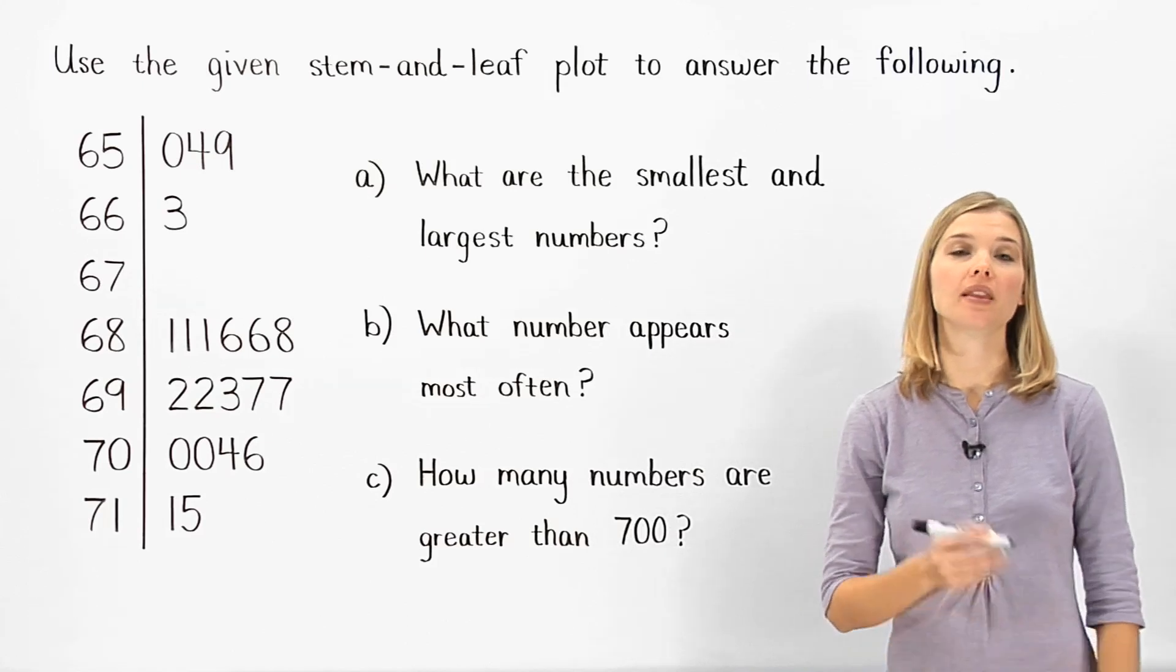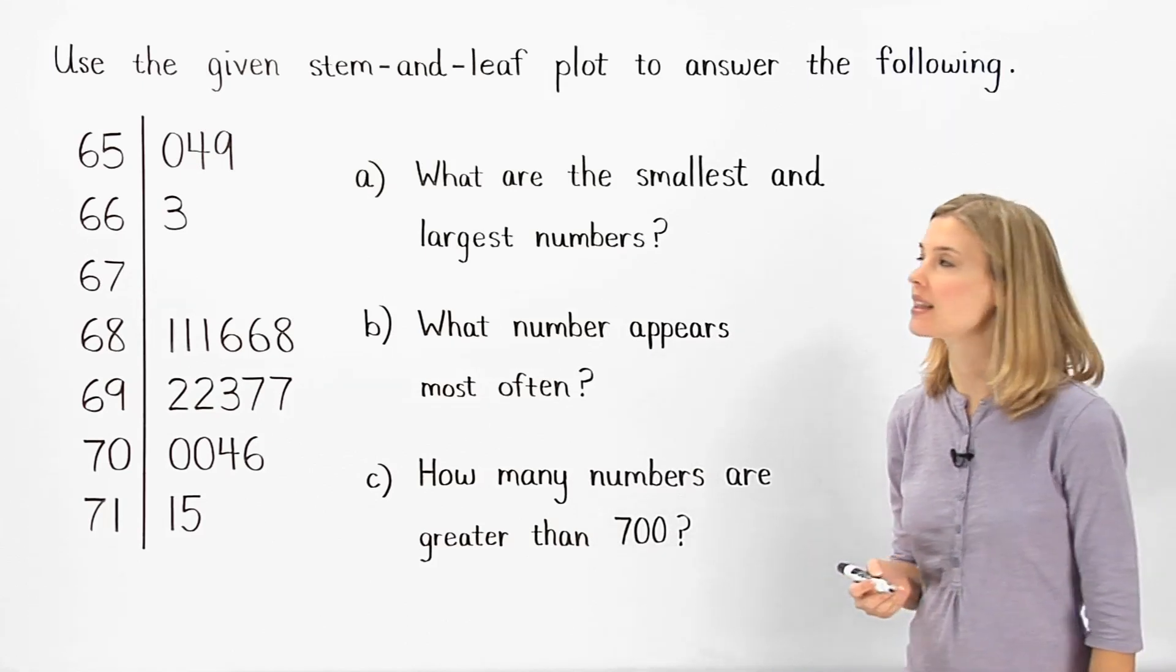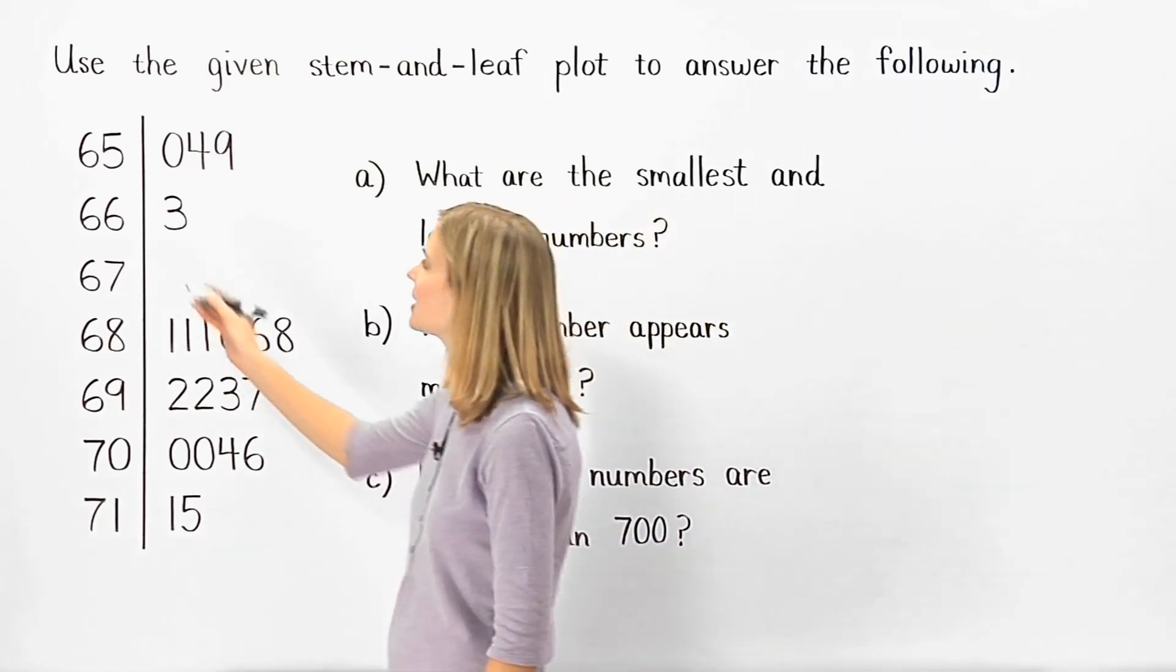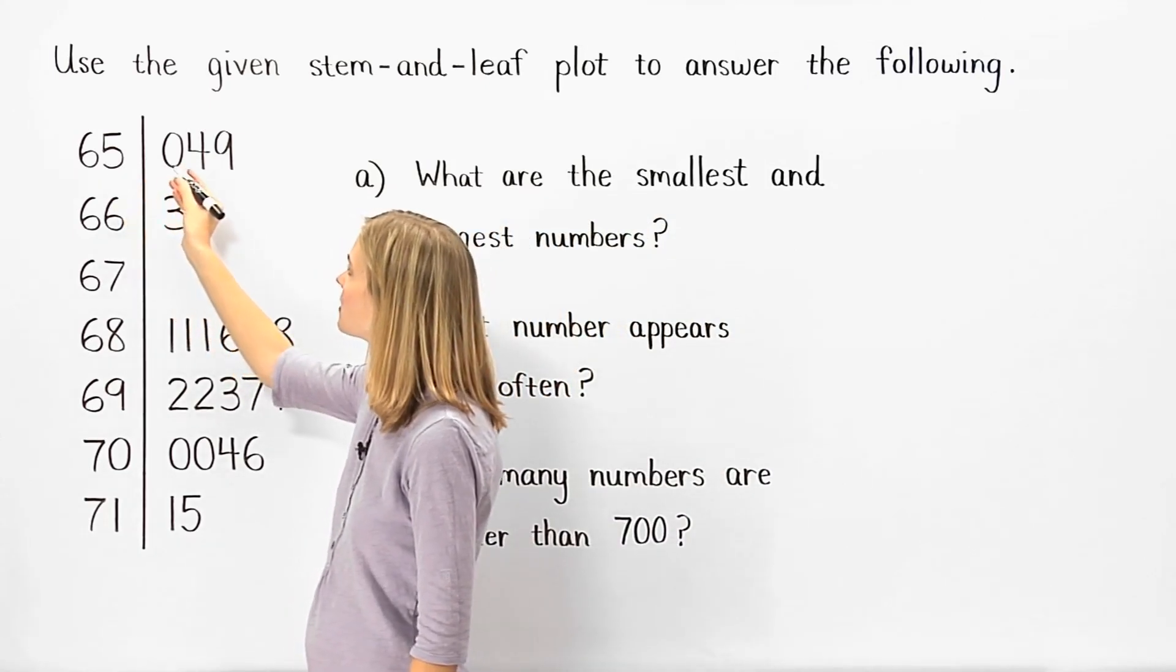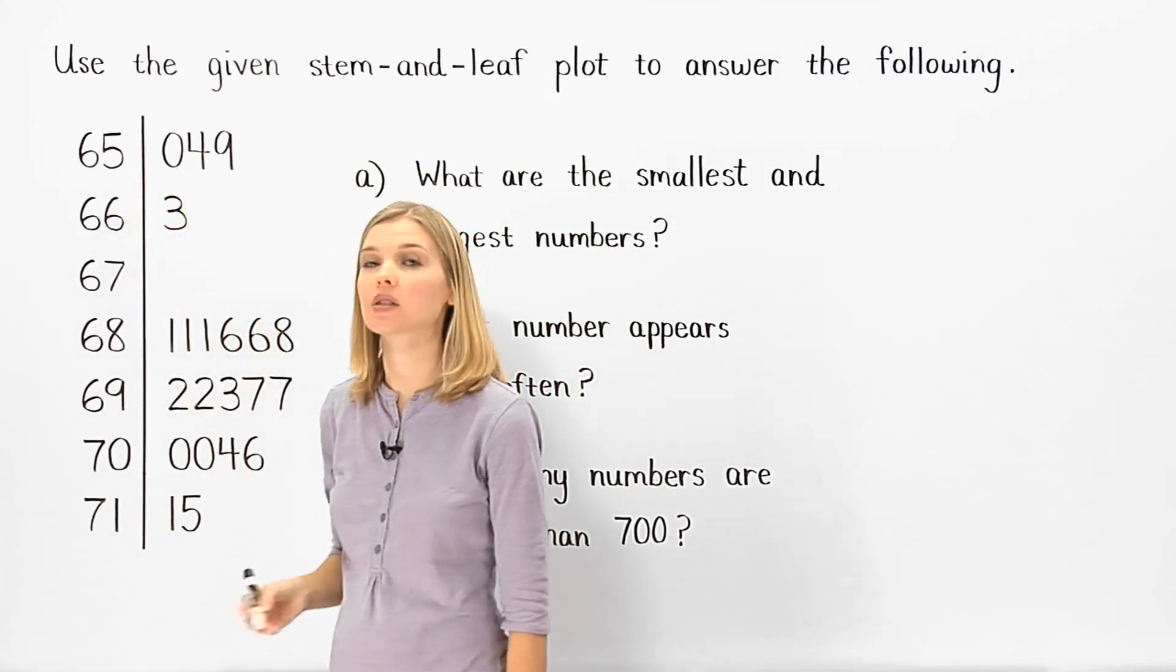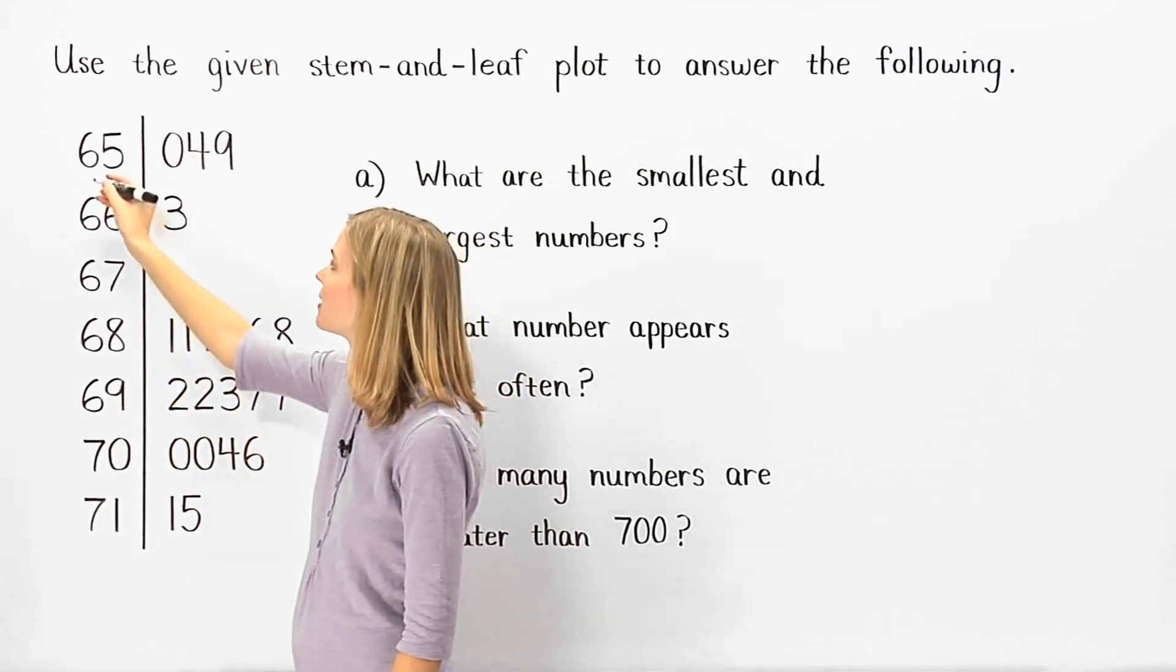In part A, to find the smallest number, notice that the smallest stem in the plot is 65, and the smallest leaf for this stem is 0, so the smallest number in the data set is 650.